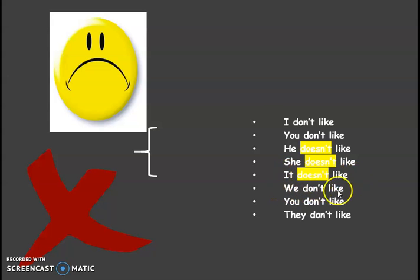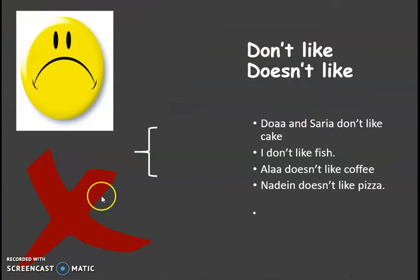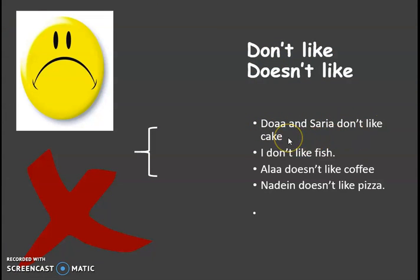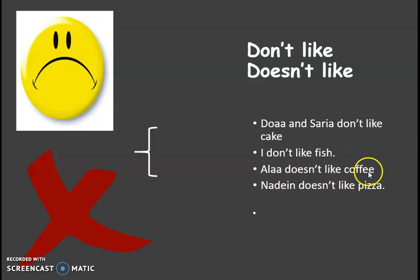Again, we don't like, you don't like, and they don't like. For example, Doa and Sarah don't like cake. I don't like fish. Alla — third person singular — doesn't like coffee. And Nadine doesn't like pizza.